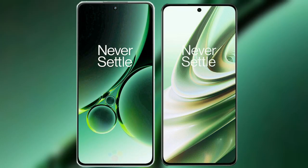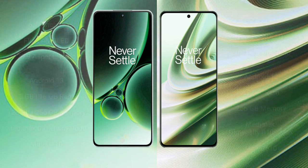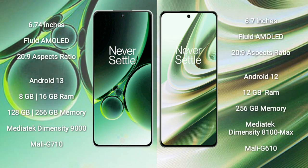I will compare the new OnePlus Nord 3 with the OnePlus 10R. OnePlus Nord 3 comes with a 6.74-inch flat AMOLED display and 120Hz refresh rate. OnePlus 10R comes with a 6.7-inch flat AMOLED display and 120Hz refresh rate. OnePlus Nord 3 runs on the Android 13 operating system, while OnePlus 10R runs on the Android 12 operating system.